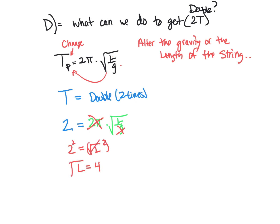So that means if you increase the length by a factor of 4, your period would be double. So that's an acceptable answer for that.